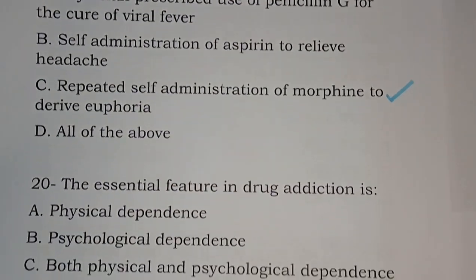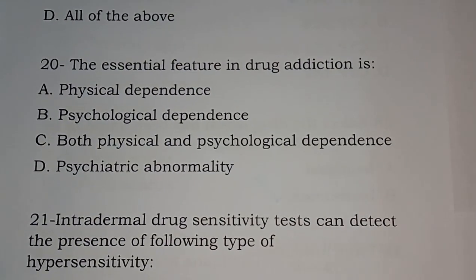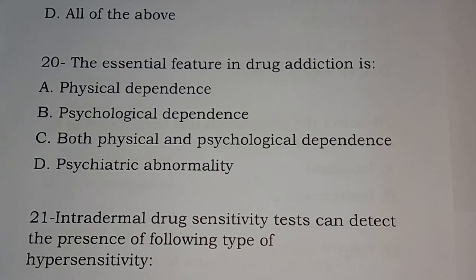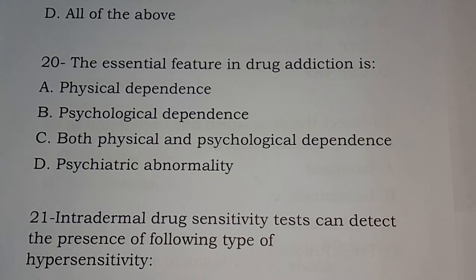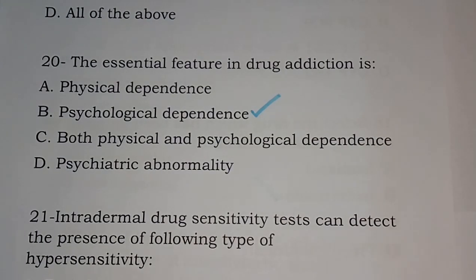Question number twenty: the essential feature in drug addiction is — options are: physical dependence; psychological dependence; both physical and psychological dependence; psychiatric abnormality. The correct answer is option B — psychological dependence is the essential feature in drug addiction.